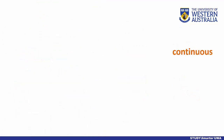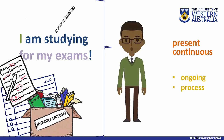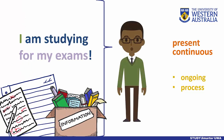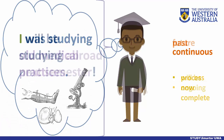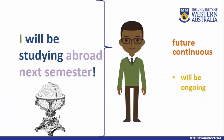The continuous aspect indicates an action that is, was, or will be ongoing. It requires a form of the verb 'to be,' as well as the -ing form of the main verb. Note that it is this auxiliary verb 'to be' that changes tense, while the main verb remains in its -ing, or present participle, form.